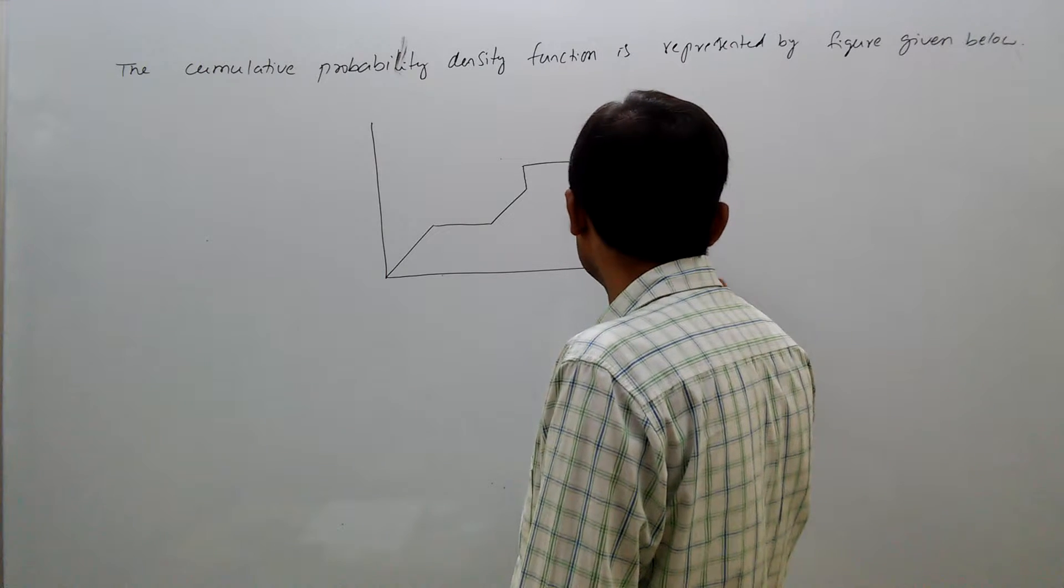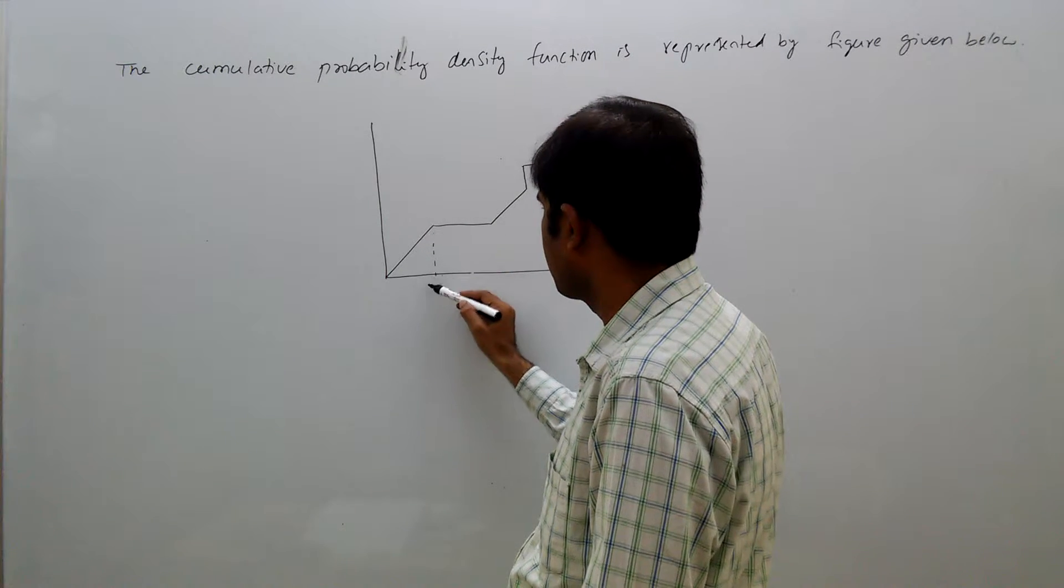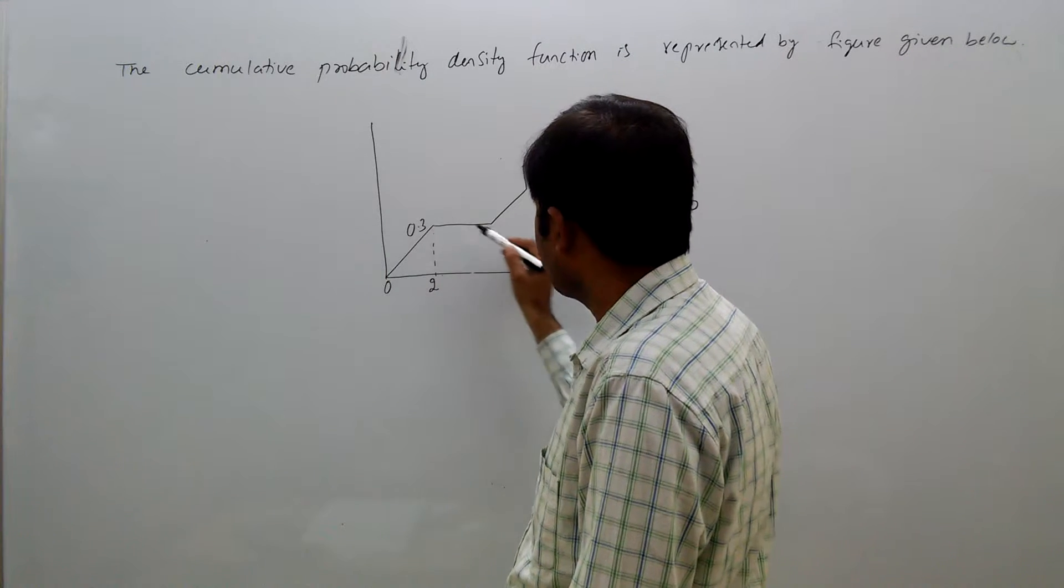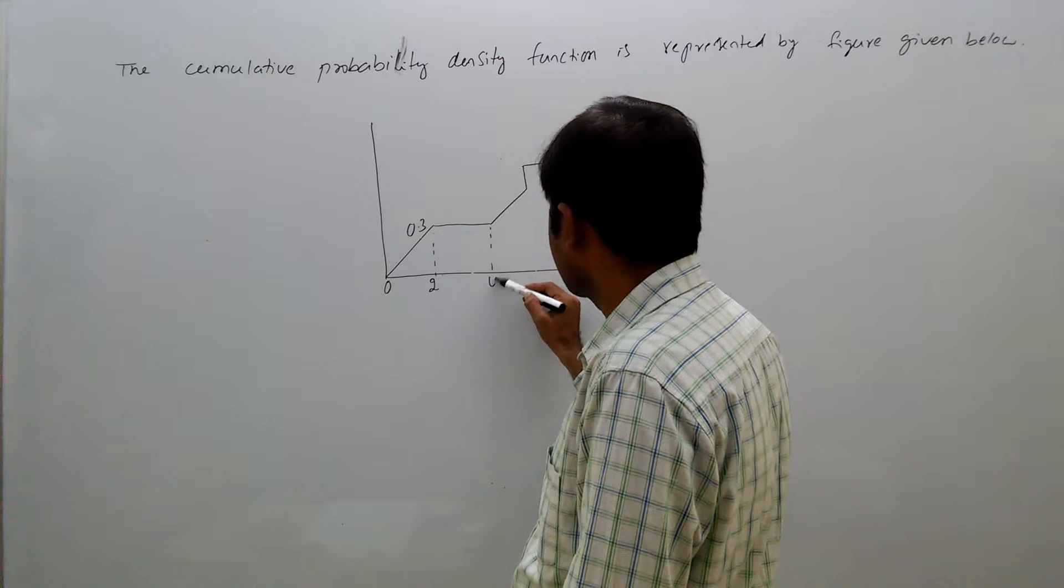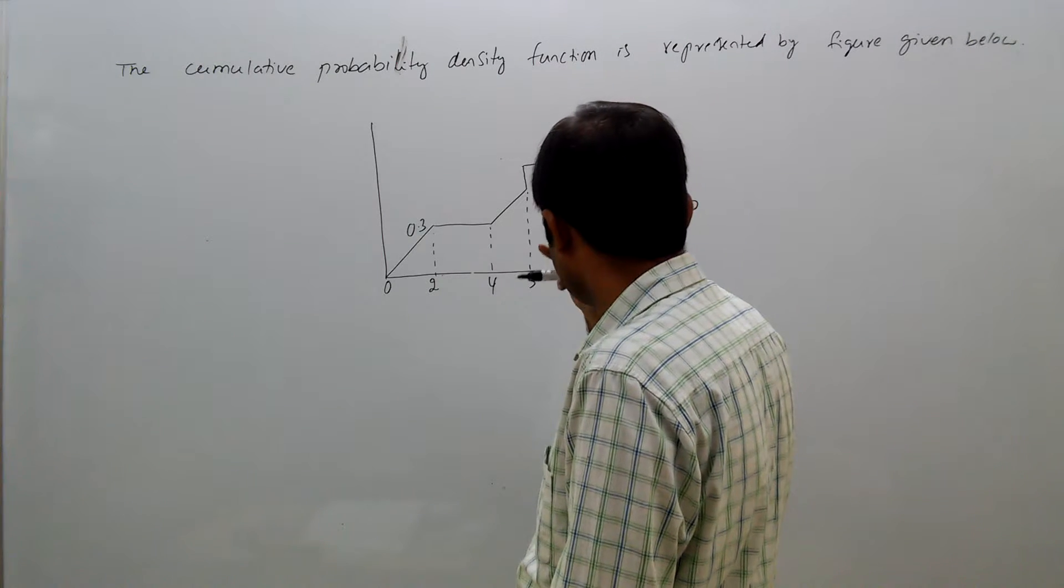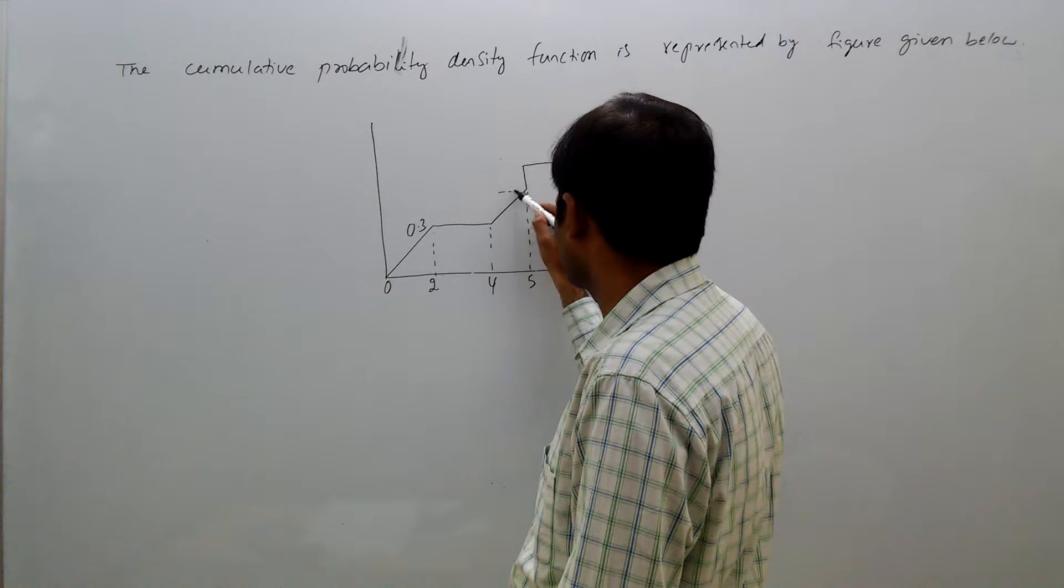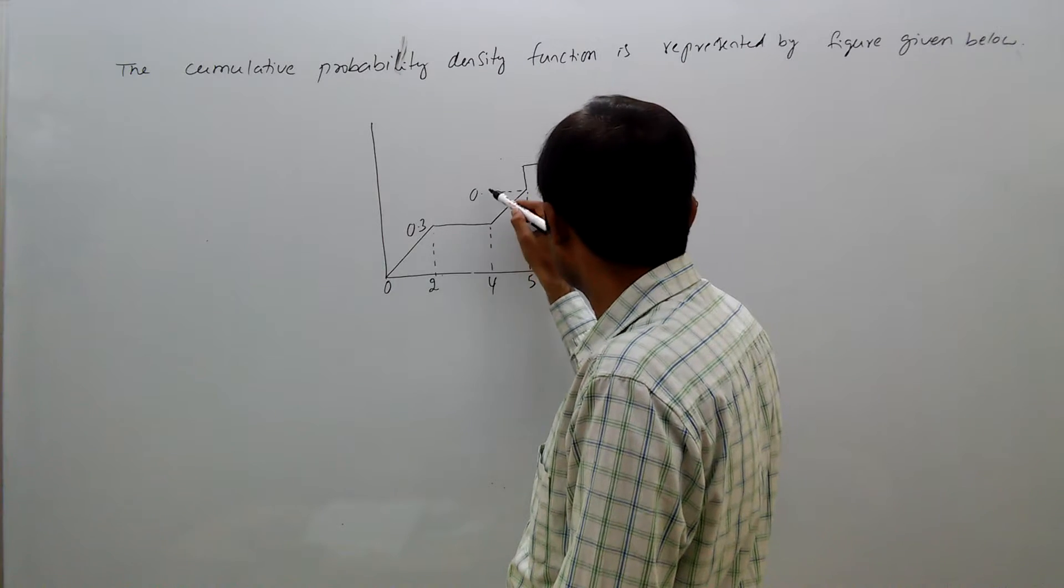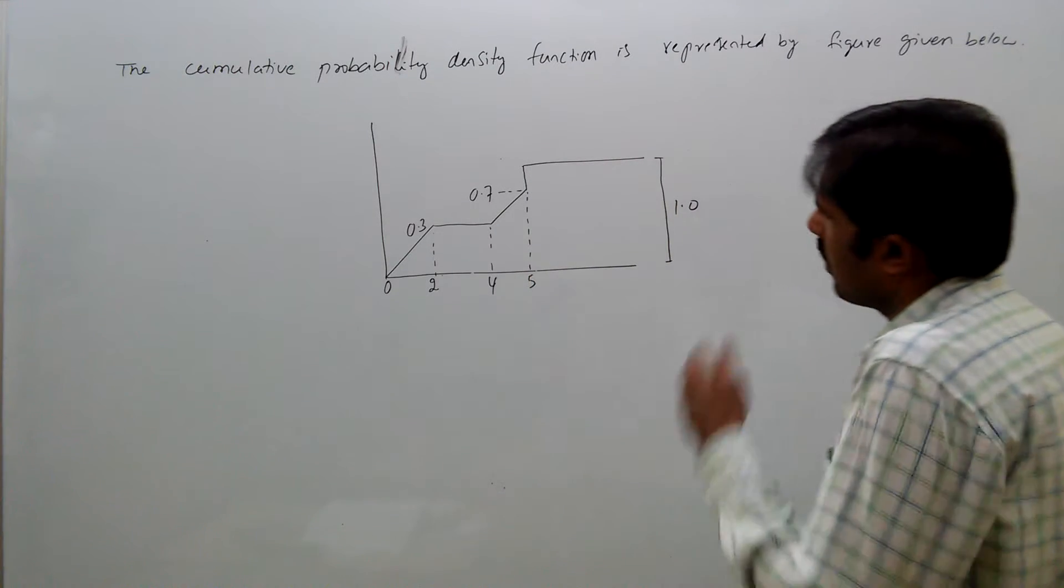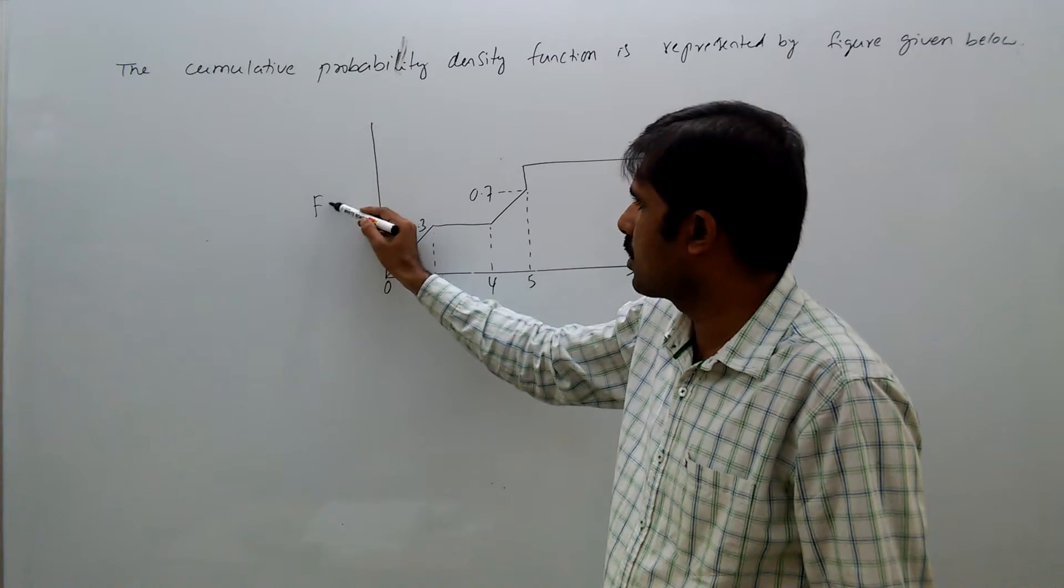The values are 1, 0, 2, 0.3, 4, 5, this is 0.7, like this. This is random variable x, this is the cumulative distribution f of x.